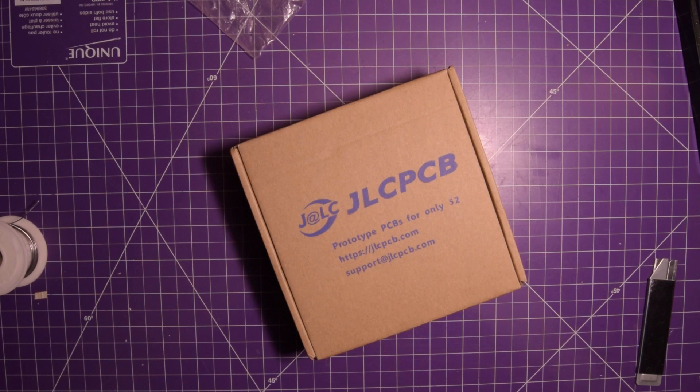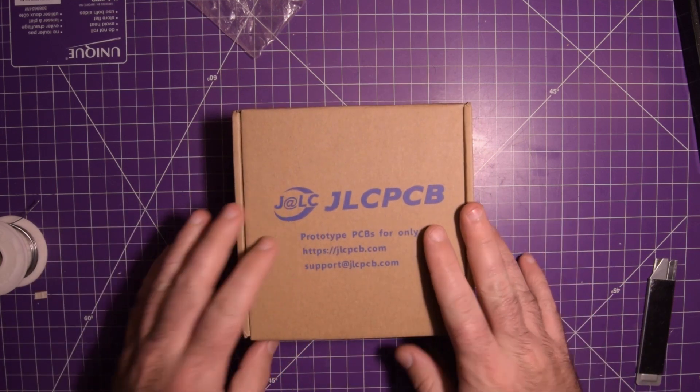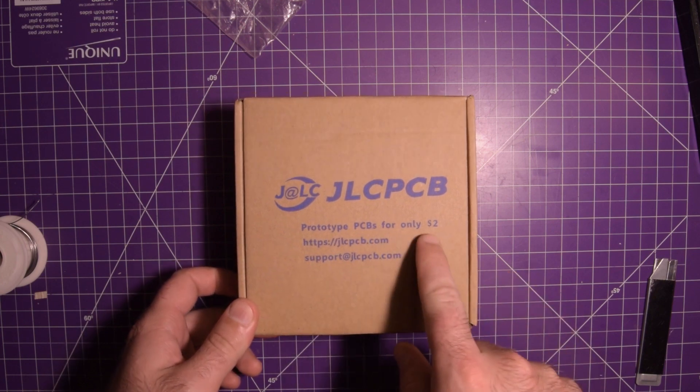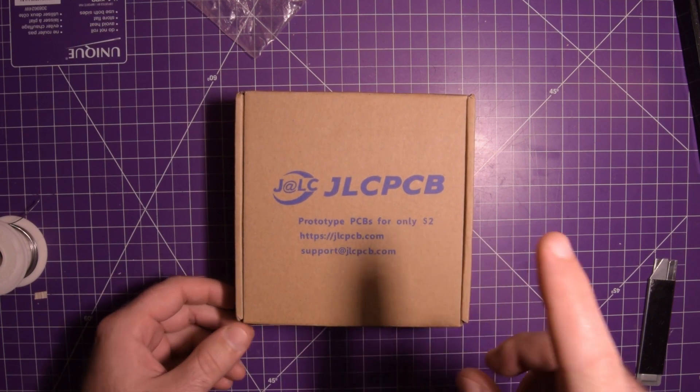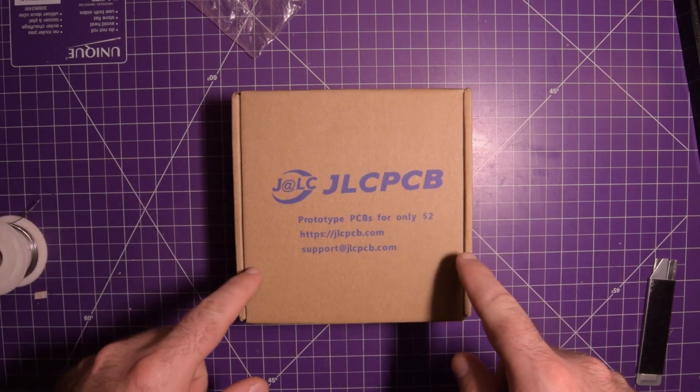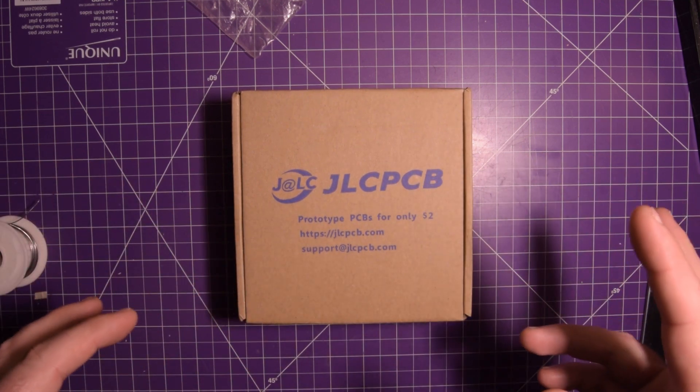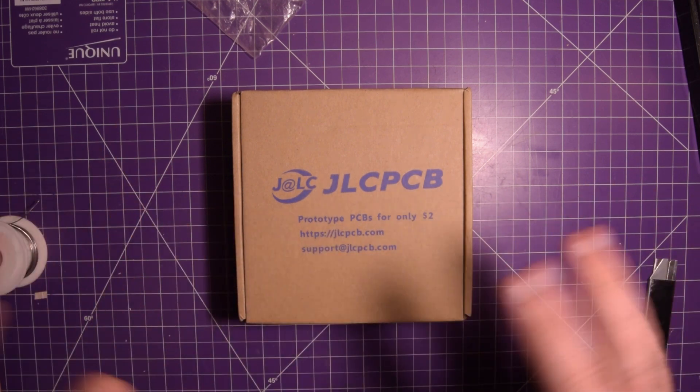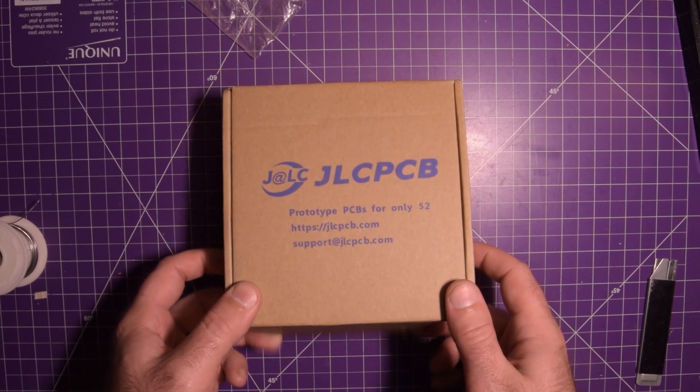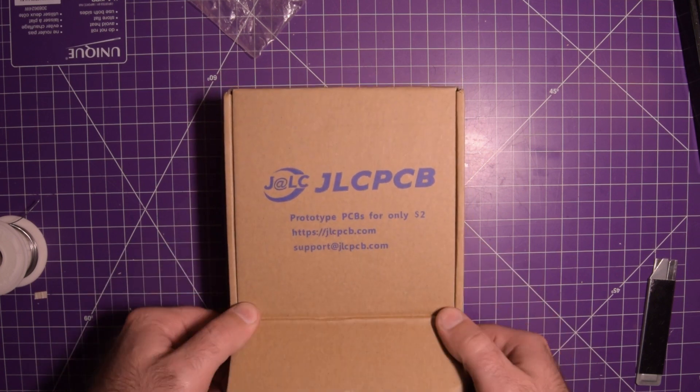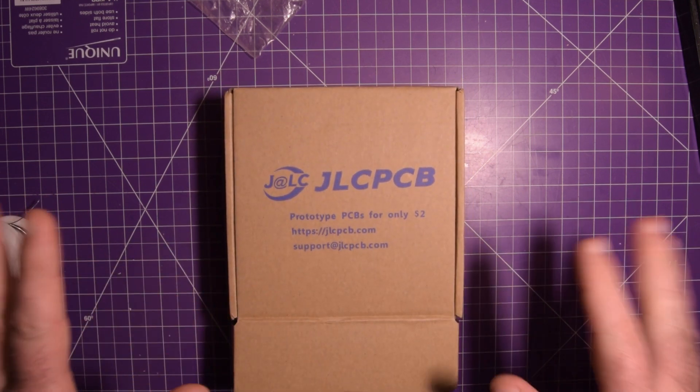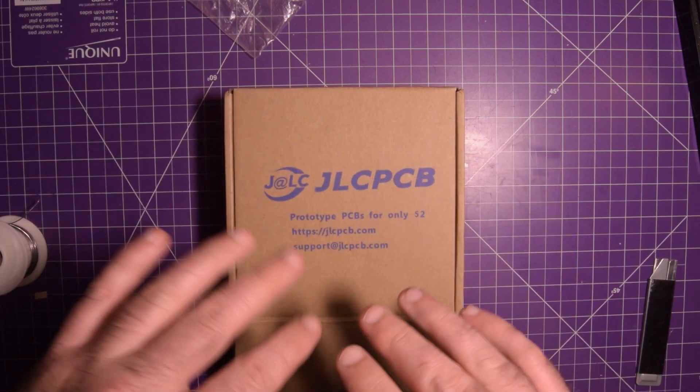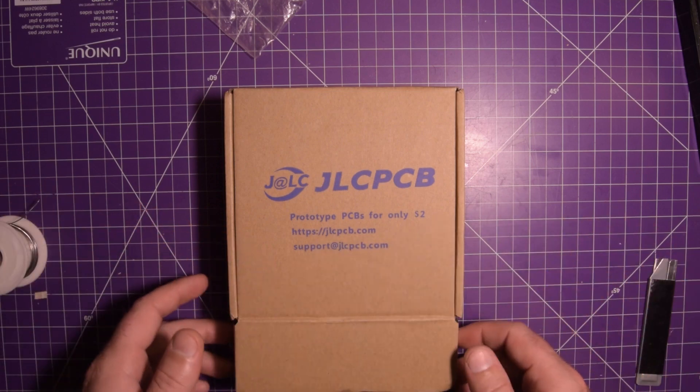I ended up getting the circuit boards made at JLC. Their prototype PCBs for two bucks is sort of true. It is $2 for your first order and you get $10 off the express shipping and then you get coupons for other things. So your first order will be cheap, but I don't know about the rest. I'll keep you posted because if I'm happy with this, I may actually use them again. They're not sponsoring me, so nothing's guaranteed.